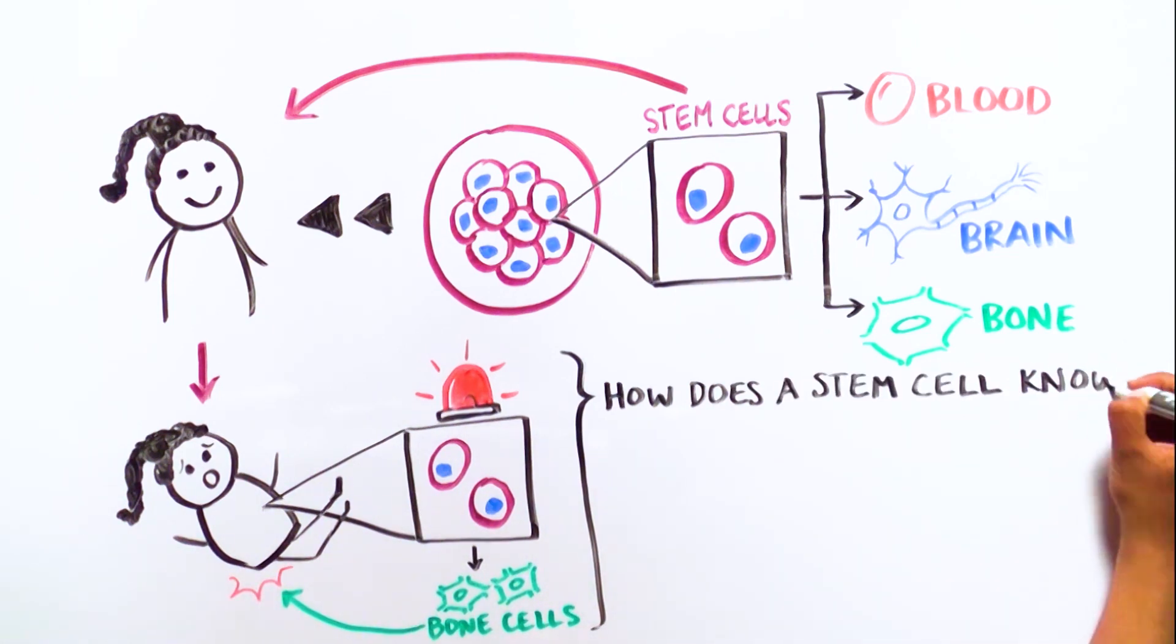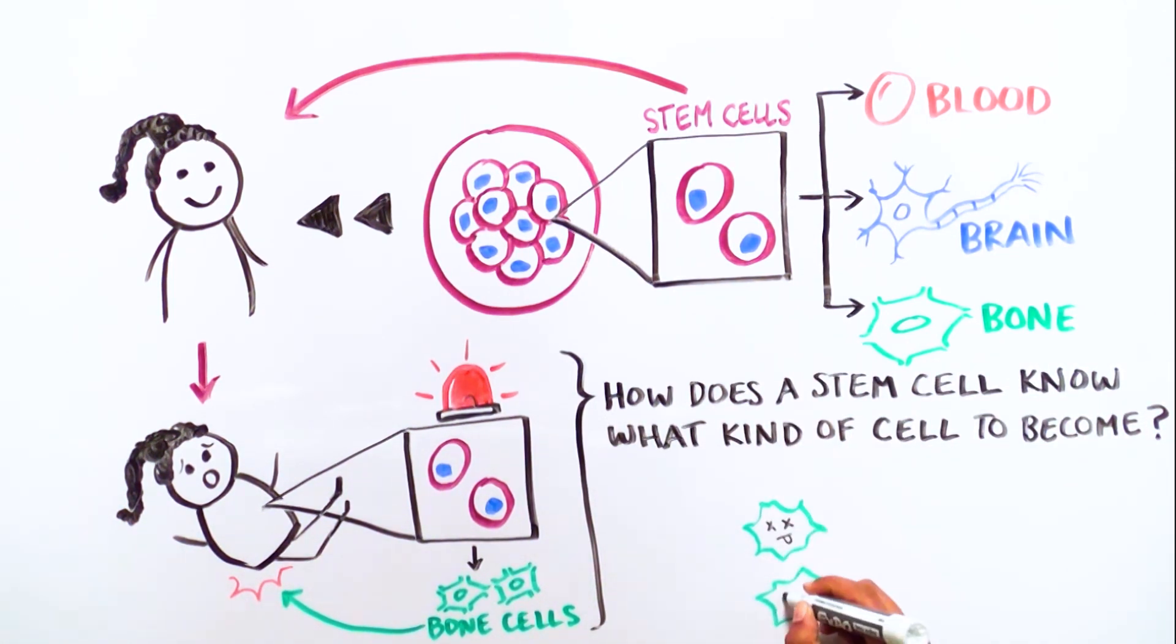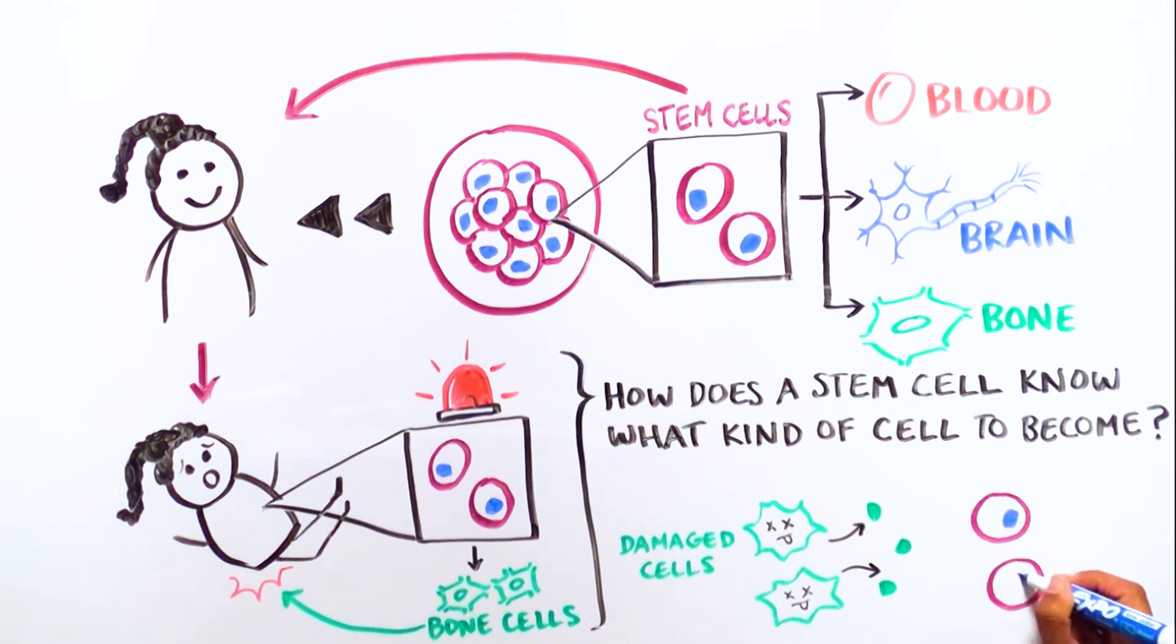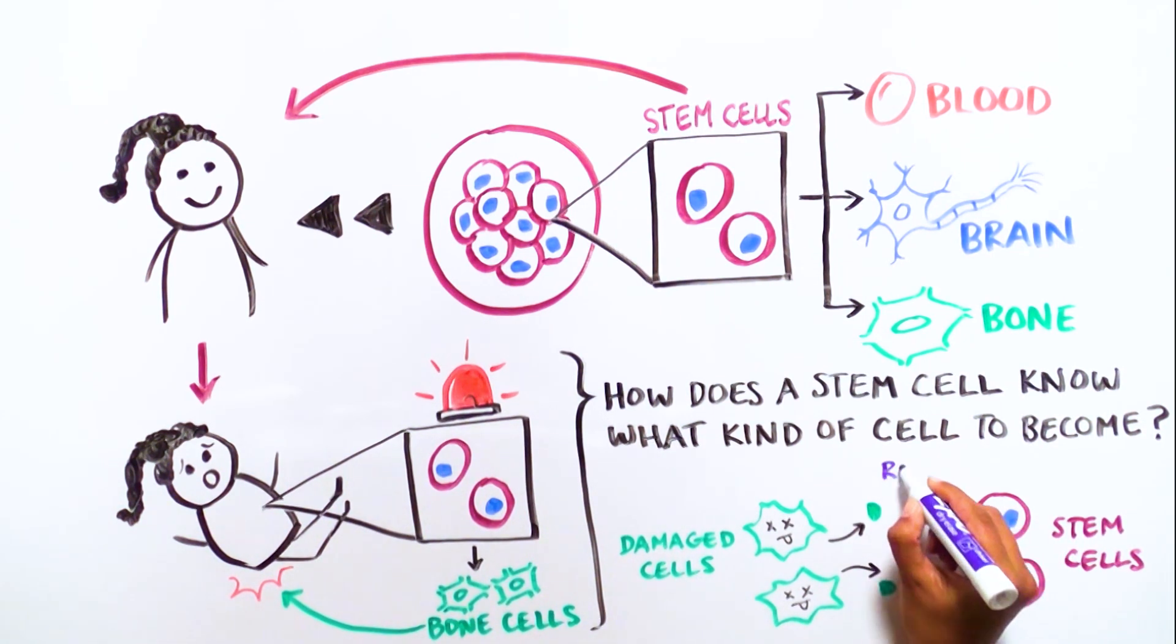How does a stem cell know what kind of cell to become? Substances from and around the damaged cell that need to be replaced bind to surface proteins of incoming stem cells, which tell them what to become. These surface protein receivers are called receptors.